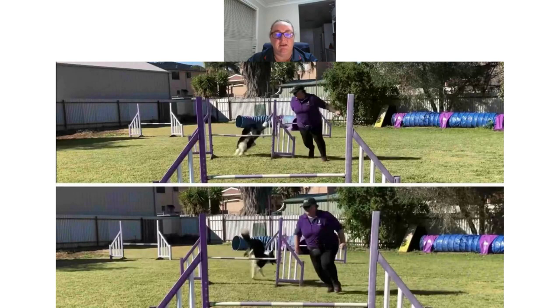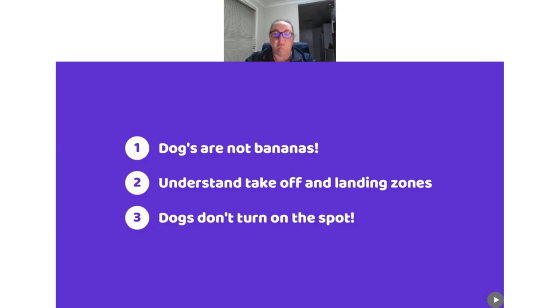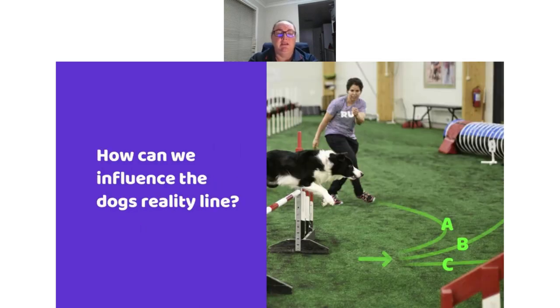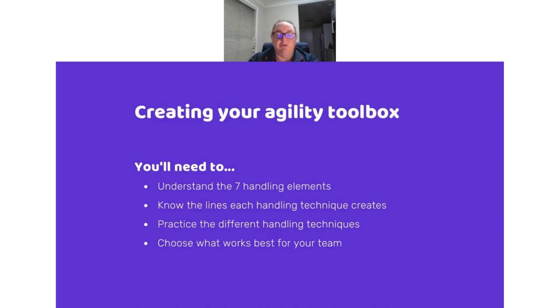You can really see the difference in their takeoff spots. I'm doing nothing different in my handling — it's just what the dog does naturally. Not all dogs will do that natural square up, so in the follow-up emails I'll be adding some information about how we can teach our dogs to square up a bit better. If we want to change where the dogs take off from, we need to look at changing that takeoff spot. To do that, we want to think about how we can influence the reality line of our dogs. In order to do this, there are a few things we need to take into account — this is all about where you can create your agility toolbox, and it really comes down to having an understanding of you and your dog.